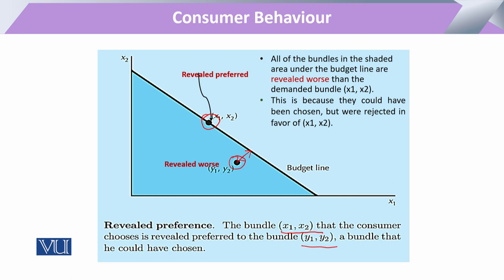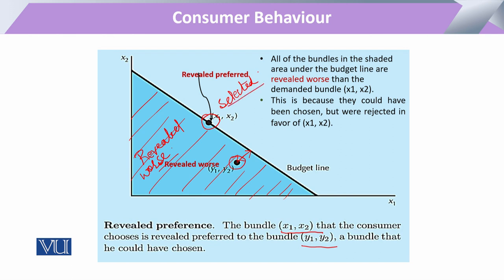Yahan pe Y1 Y2 wala bundle within budget line hai, to wo isko bhi purchase kar sakta tha. Is gap ke dauran mein income ka kuch portion consumer ke paas bach jaata, lekin isके bawajood usne X bundle ko purchase kiya. Baaki saare bundles hum kahenge ke they are revealed worse as compared to the bundle he purchased. So the theory of revealed preference has expressed — without any price, income, or other data — through the purchase combinations of the consumer, the behavior of the consumer.